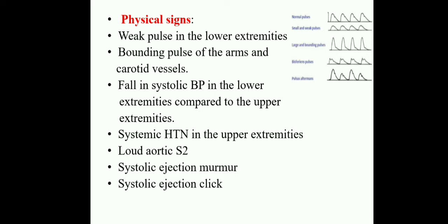There is a fall in systolic blood pressure in the lower extremities compared to the upper extremities, and systemic hypertension in the upper extremities. Loud aortic murmurs are audible at the S2 area. Systolic ejection murmurs are heard during ventricular contraction. A systolic ejection click is also auscultated. These are the physical signs of coarctation of aorta.